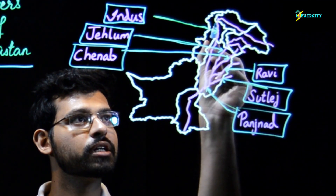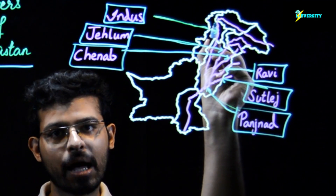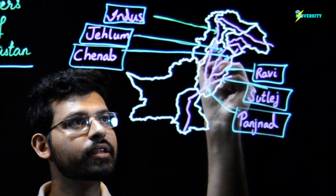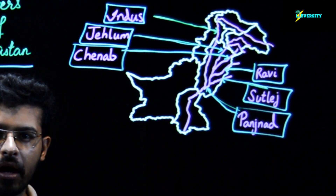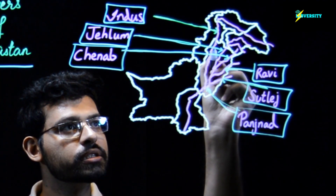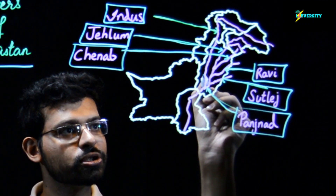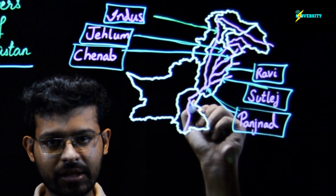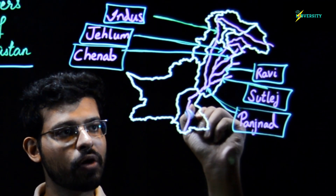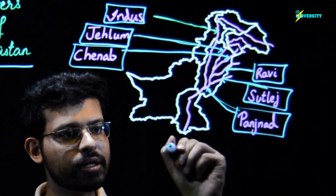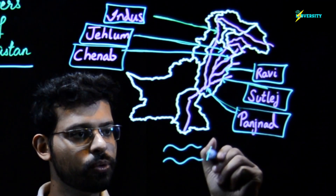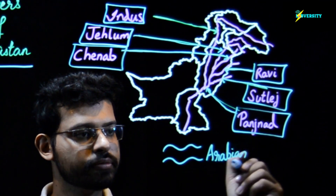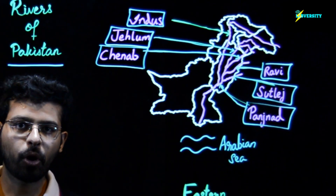River Indus goes into the Gilgit-Baltistan region and flows downwards through the Khyber Pakhtunkhwa region, taking a turn and then flowing into the Punjab region. It flows southwards, covers the rest of Punjab, and then flows down into Sindh province, where it flows alone until it ultimately drains into the Arabian Sea.